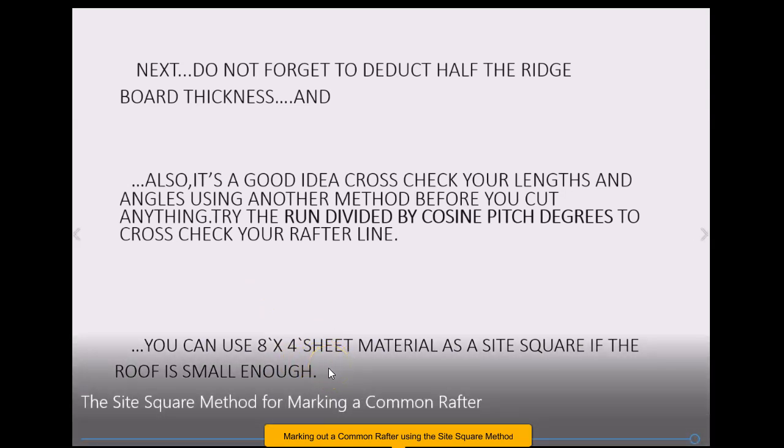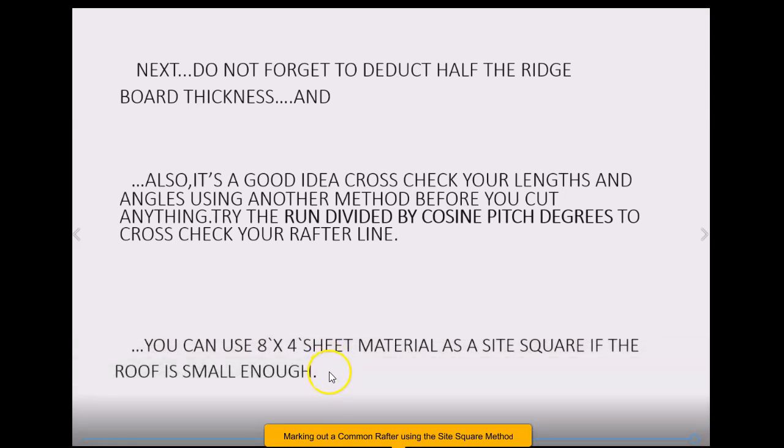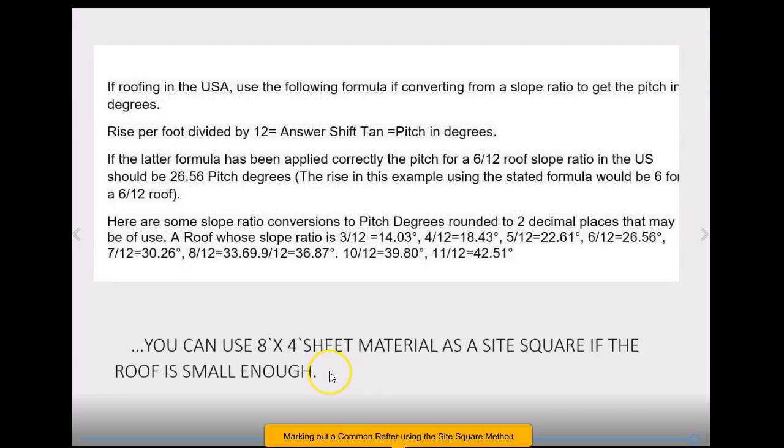The other point made here is because if the roof is small enough, like a dormer roof, you don't need to make up a nail on the ground. You know, you can use the corner of an 8 by 4 sheet because the two edges of the sheet obviously are 90 degrees to each other, so why waste your time making up a nail in that case.